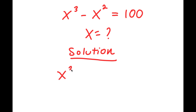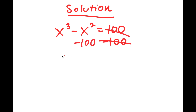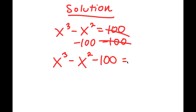I have x to the power of 3 minus x squared is equal to 100. I'm going to subtract 100 on both sides as my first step. Now I get x to the power of 3 minus x squared minus 100 is equal to 0.